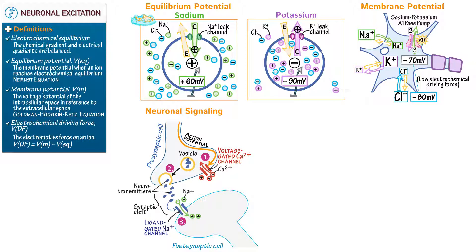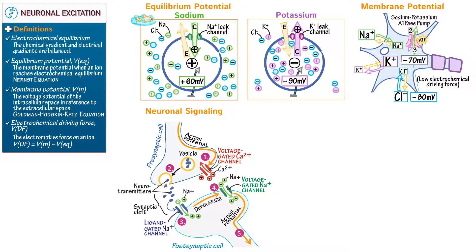This slightly depolarizes the postsynaptic membrane — it makes it more positive. Draw voltage-gated sodium channels and show that when the depolarization reaches a certain voltage threshold, these channels open. Sodium rushes into the cell, causing further depolarization in a feed-forward cycle. This positive feedback system propagates the action potential down the membrane, passing the signal from one neuron to the next.